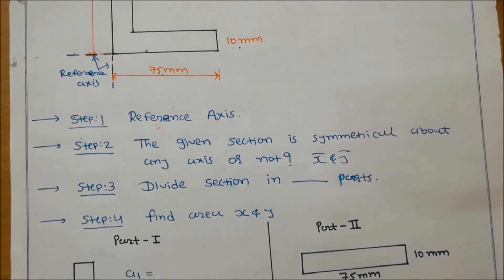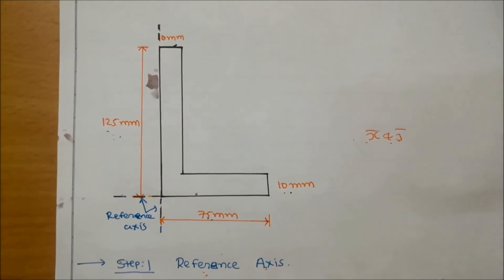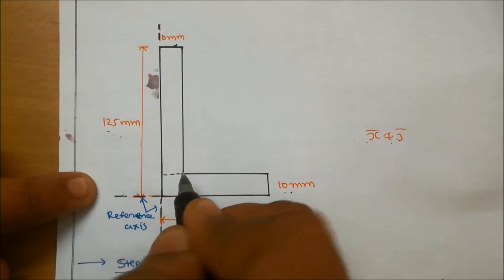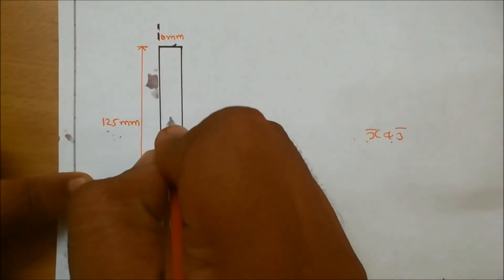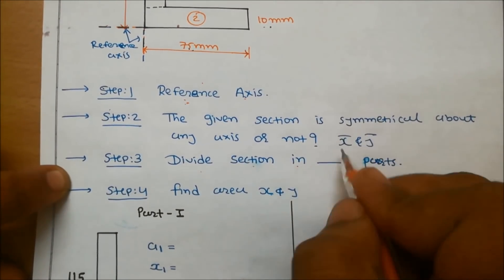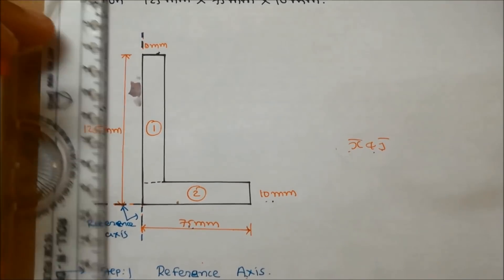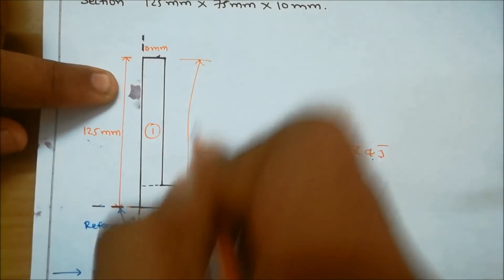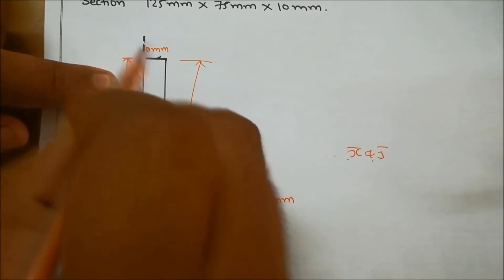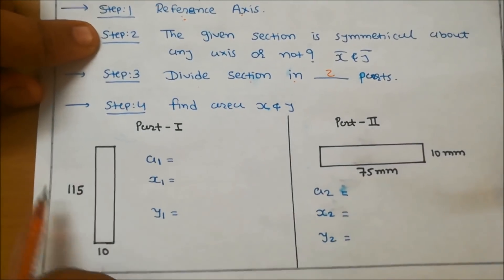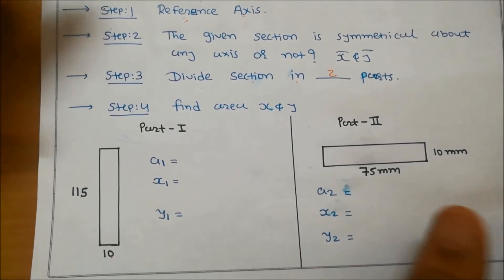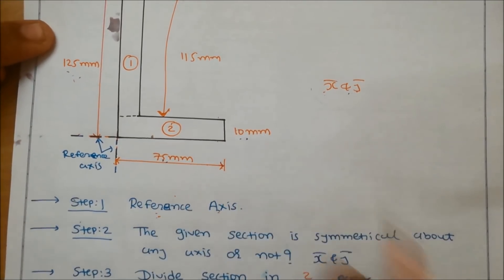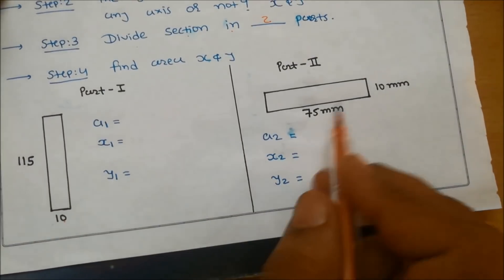In step number three, divide the section into parts — here, two rectangles. The first rectangle has total height 125 mm minus 10 mm, giving 115 mm, with thickness 10 mm, so its dimensions are 115 mm by 10 mm. The second rectangle has dimensions 75 mm by 10 mm.